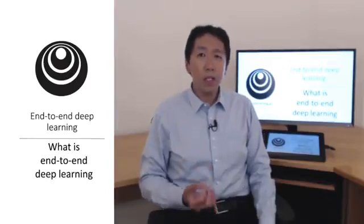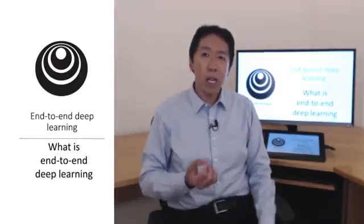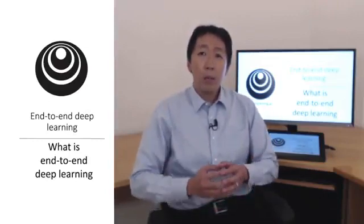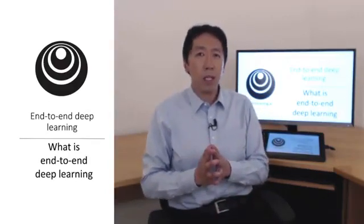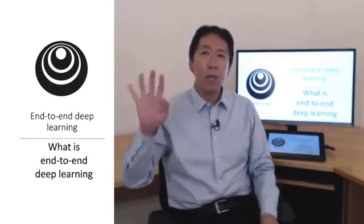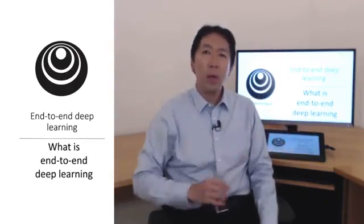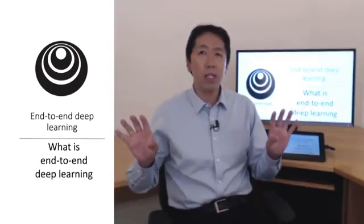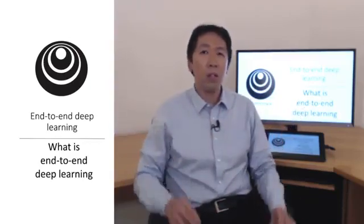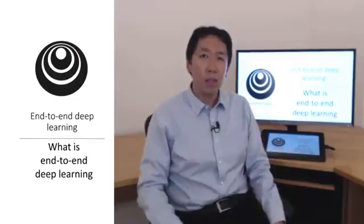One of the most exciting recent developments in deep learning has been the rise of end-to-end deep learning. So what is end-to-end deep learning? Briefly, there have been some data processing systems or learning systems that require multiple stages of processing. What end-to-end deep learning does is it can take all those multiple stages and replace it usually with just a single neural network. Let's look at some examples.